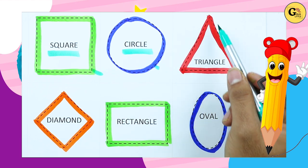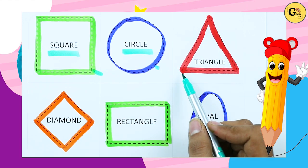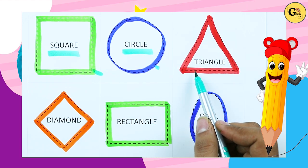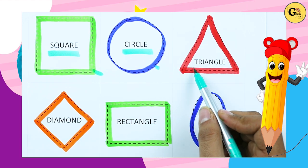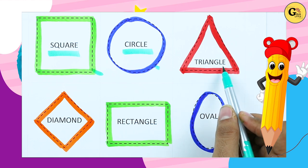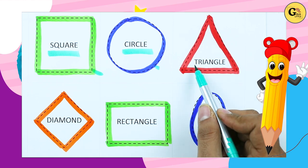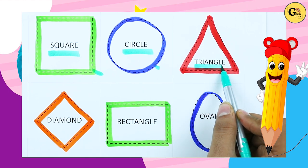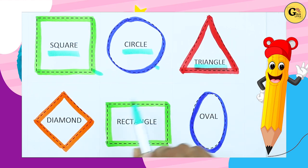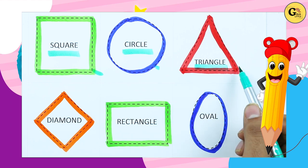Which shape is this? Triangle. T-R-I-A-N-G-L-E. It's a triangle, with red color.